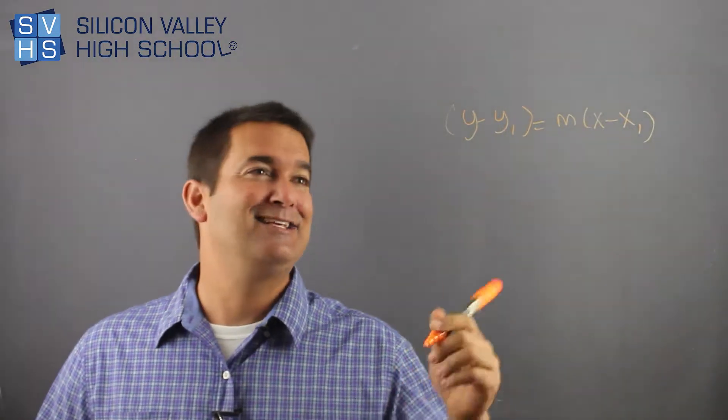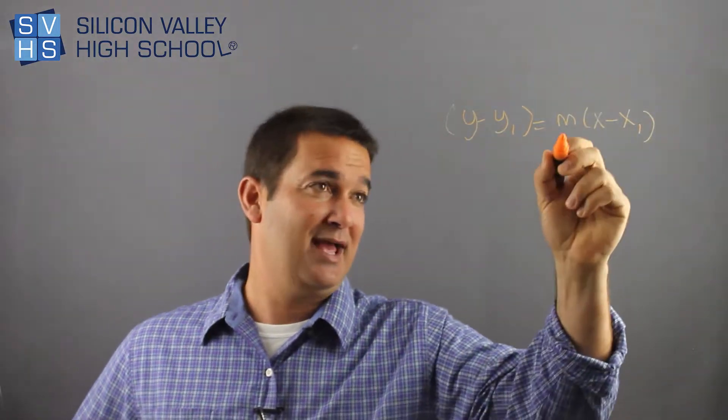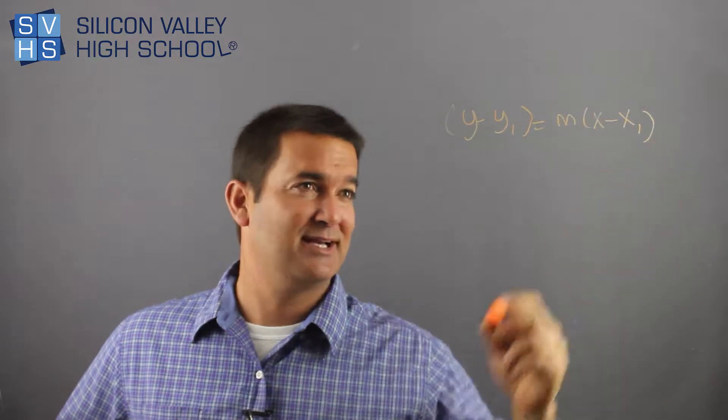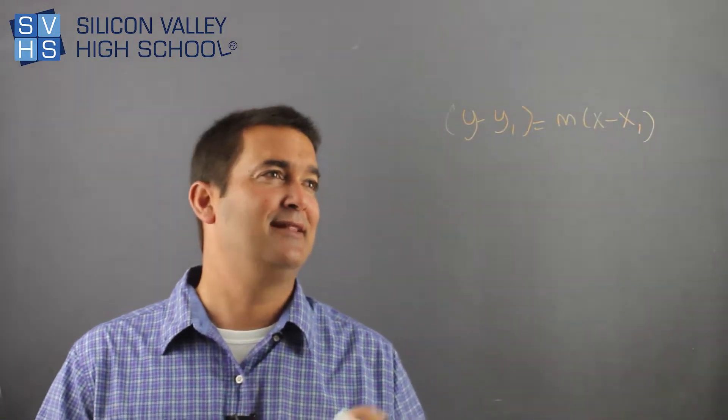And actually, it is pretty useful. The formula looks terrible: Y minus Y₁ equals M, which is slope, times X minus X₁. And it's really helpful if they give you a point and the slope.